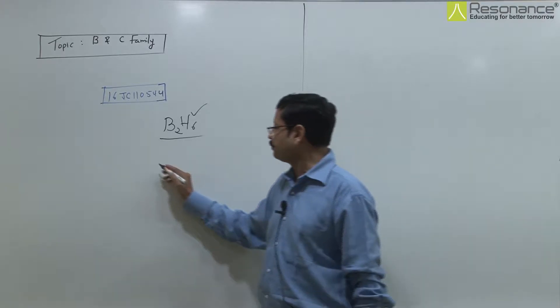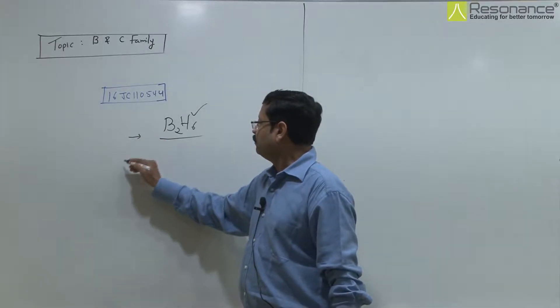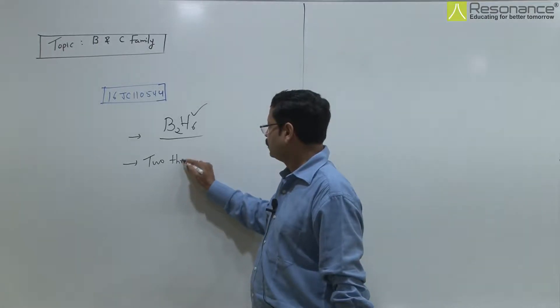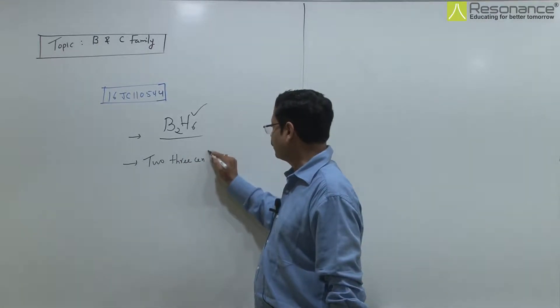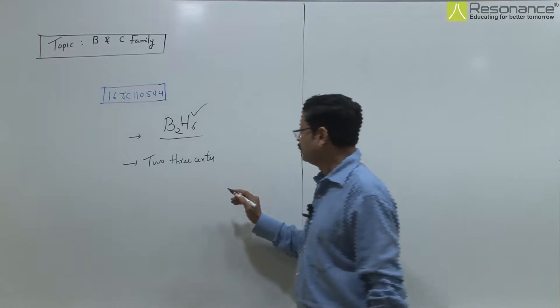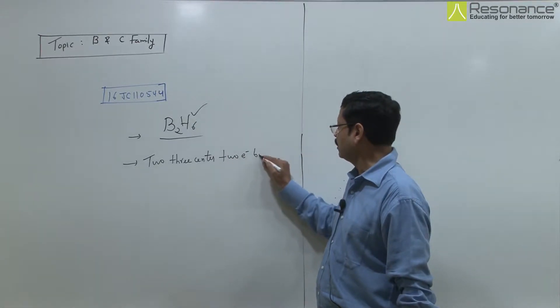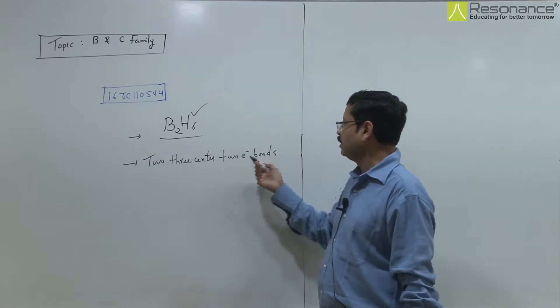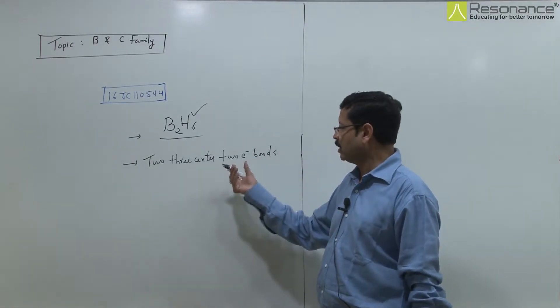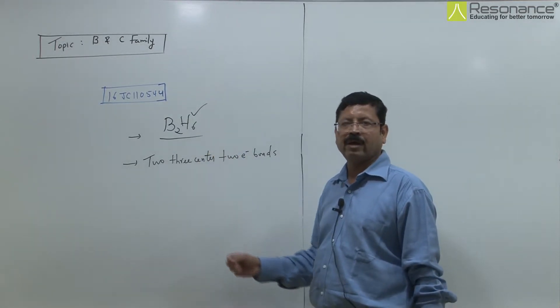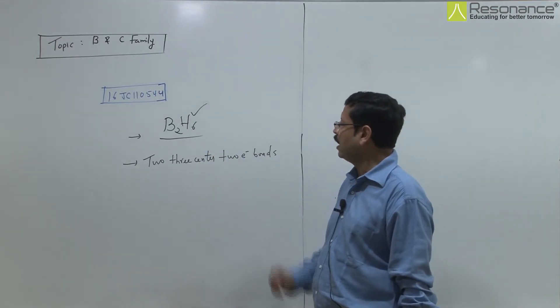Jis mein hum jante hai ki jo hai wo 2, 3 center, 2 electron bonds hote hai na. To bahut saari important baat is mein hoti hai, inko banana bond bhi bolte hai aise 2 hote hai aur boron ka jo hai wo is mein hybridization sp3 hota hai.